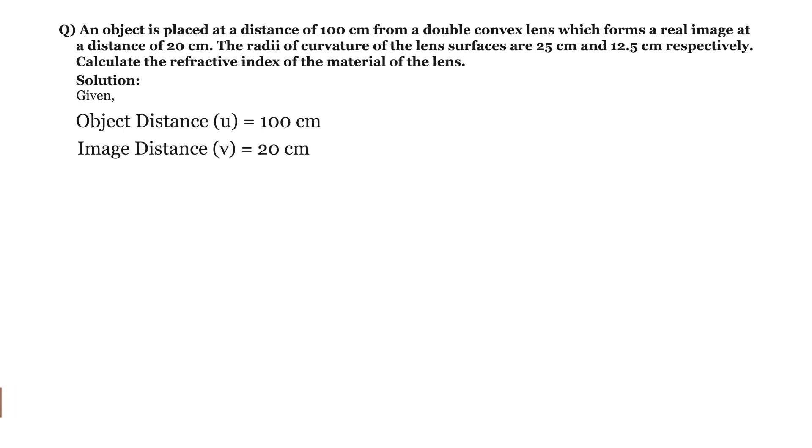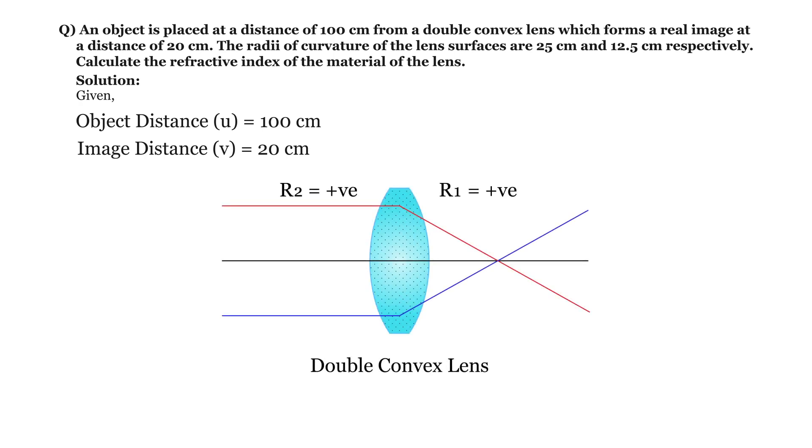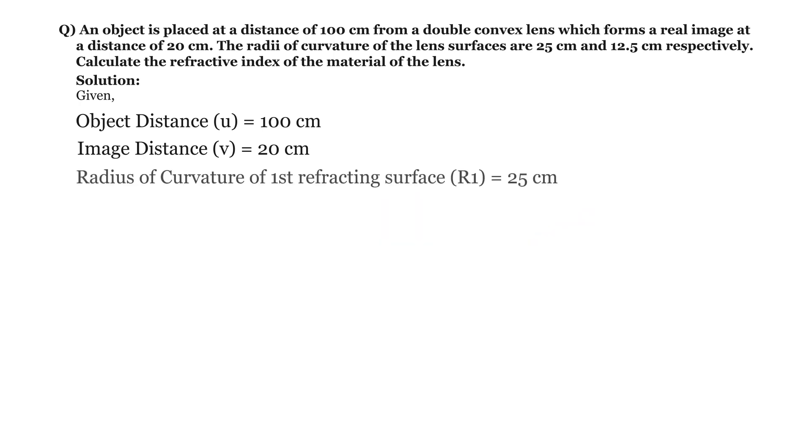When the refracting surface is convex, the radius of curvature is positive. In this case, both surfaces are convex, so both radii are positive. Therefore, R1 equals plus 25 cm and R2 equals plus 12.5 cm.